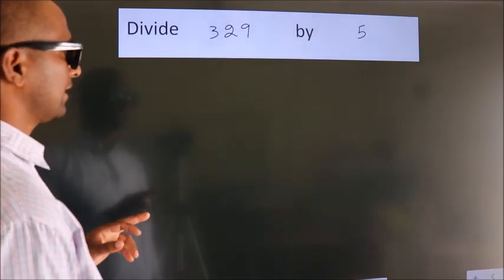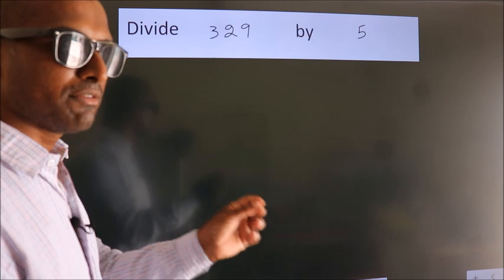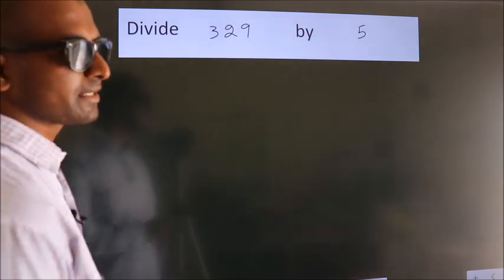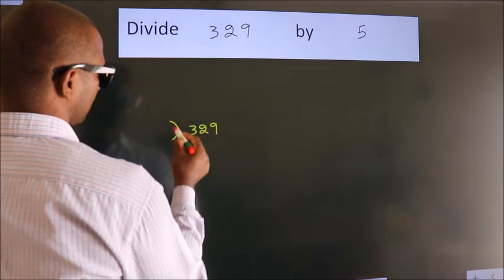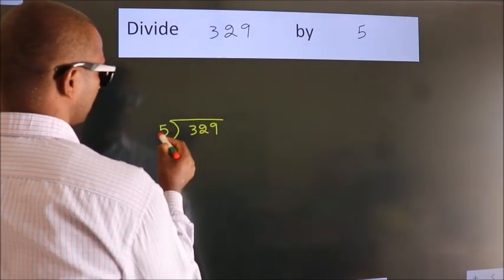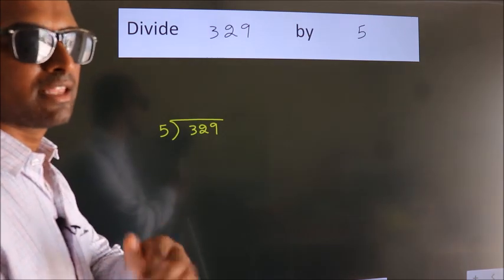Divide 329 by 5. To do this division, we should frame it in this way: 329 here, 5 here. This is your step 1. Next.